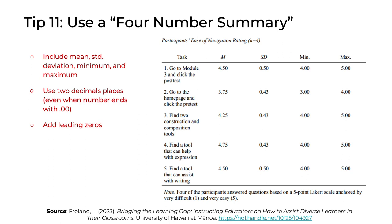Tip 11: Use a four-number summary. A four-number summary is a really easy way to report data to readers in a table format. It's called a four-number summary because four different numbers are reported: the mean and the standard deviation, as well as the minimum and maximum values of the responses collected. A couple of things to keep in mind: use two decimal places even if the number ends with a zero, so the numbers look consistent; and if you have a standard deviation or average less than one, add a leading zero to keep everything lined up nicely for readers to scan.